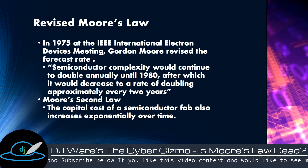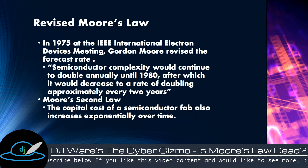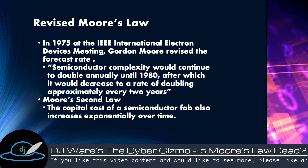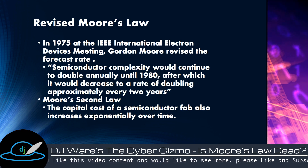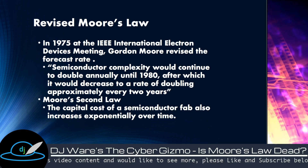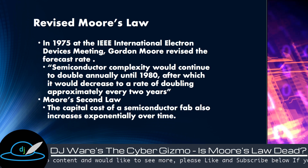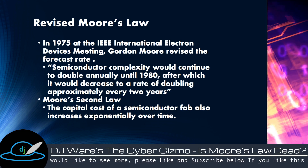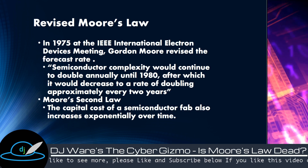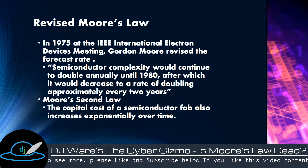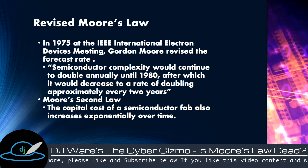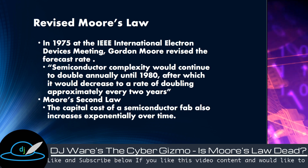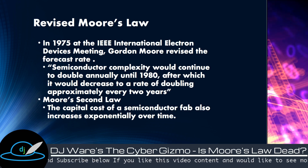In 1975, he revised that. He said it would continue to double annually until about 1980, after which it would decrease to a rate of doubling approximately once every two years. And the second law: the capital cost of the semiconductor fab would increase exponentially over time as well — the more dense the chip, the more expensive it is to build the fabrication processes. And he's been right about that.